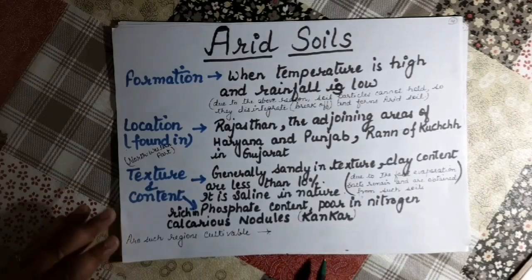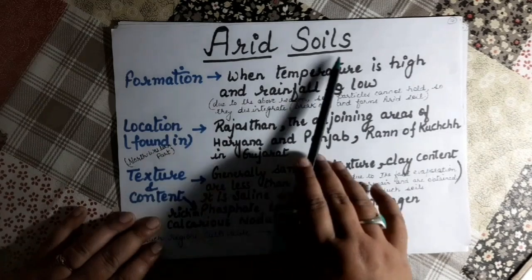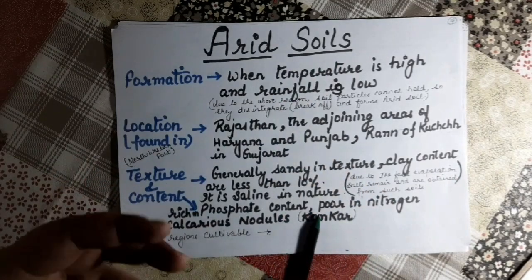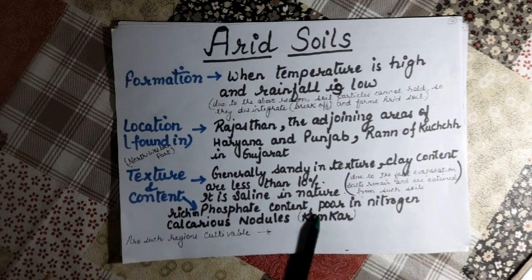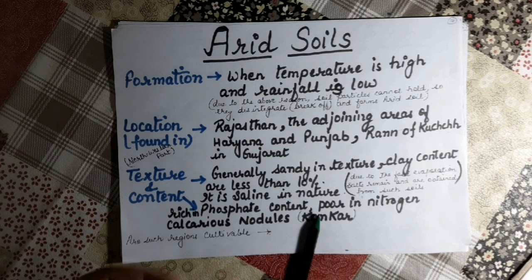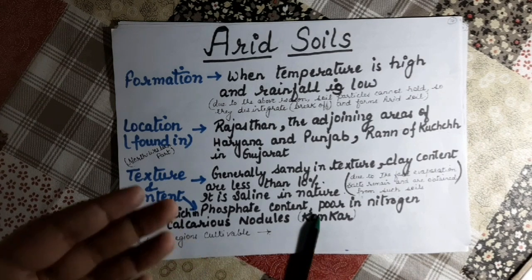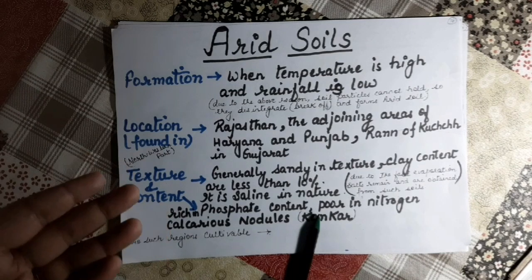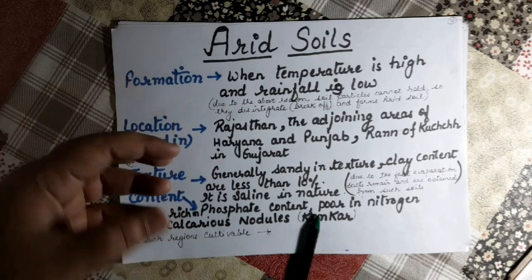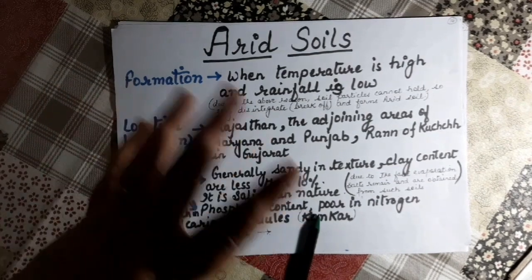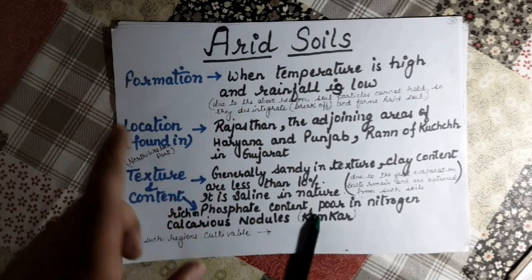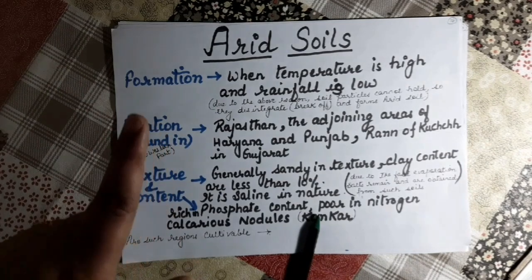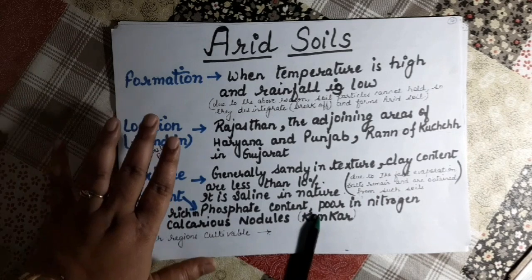Arid soils are formed in areas with very low rainfall — the dry or arid areas. They are mostly found in regions where average annual rainfall is less than 50 cm, mainly in Rajasthan and the adjoining areas of Haryana and Punjab. The Rann of Kutch in Gujarat is also an extension of this arid region.